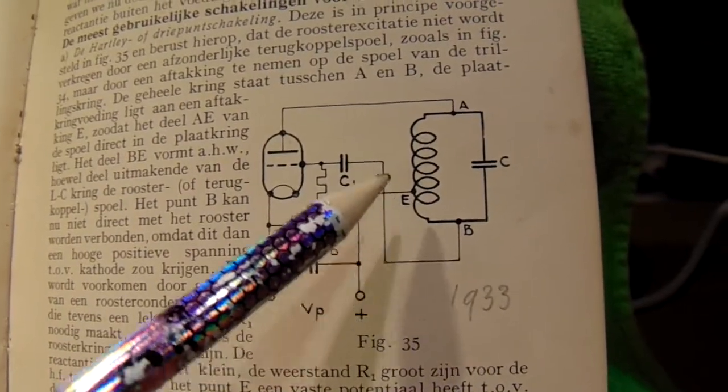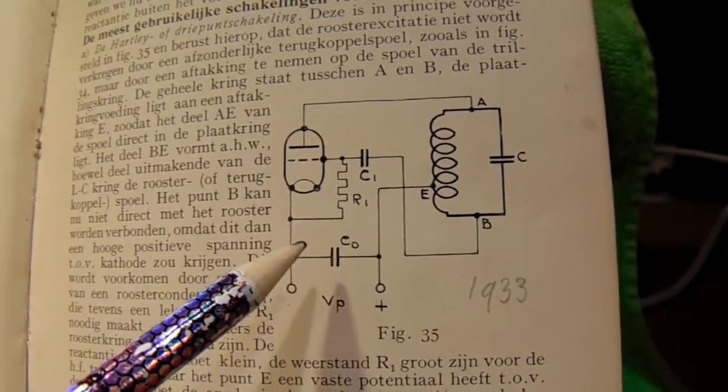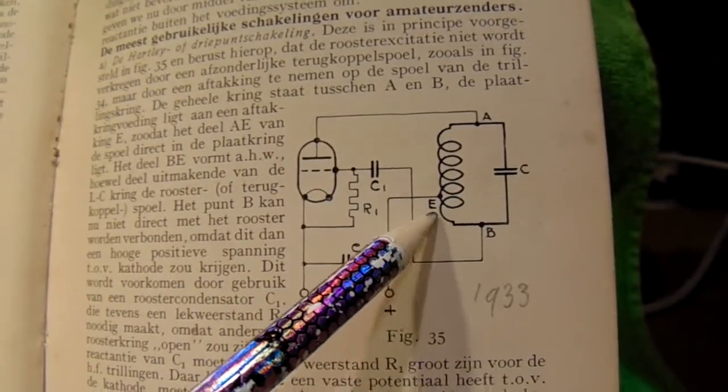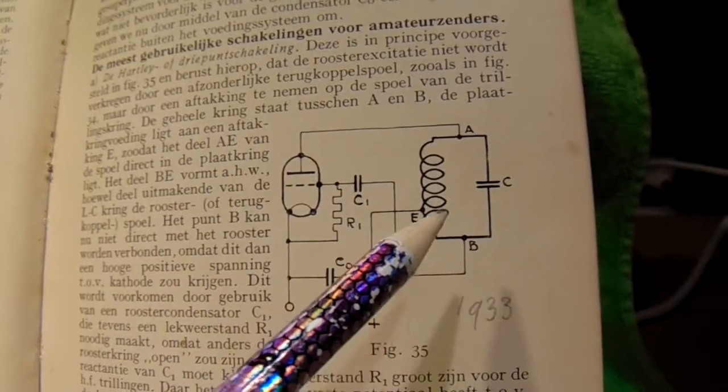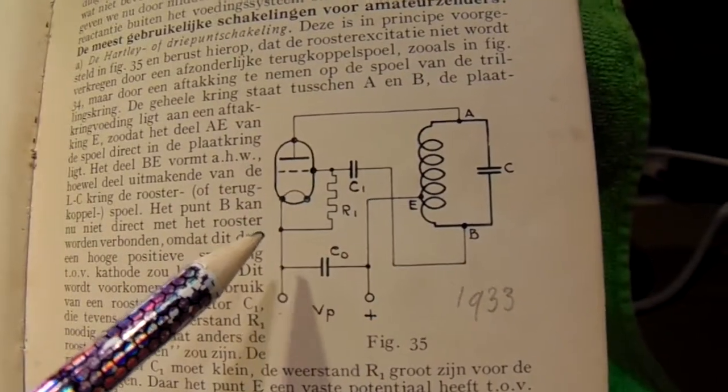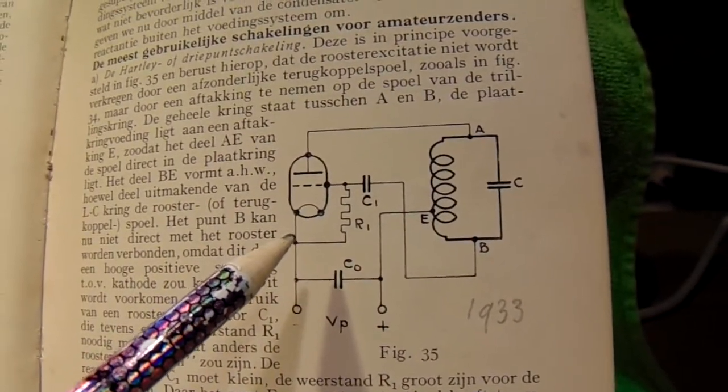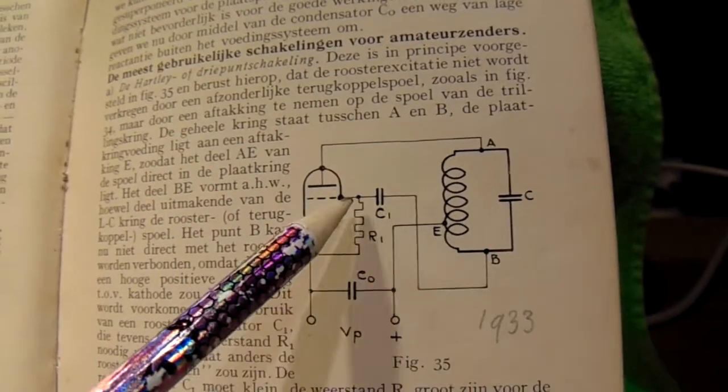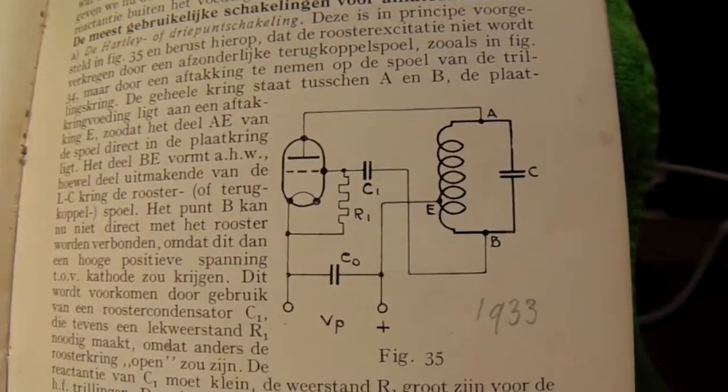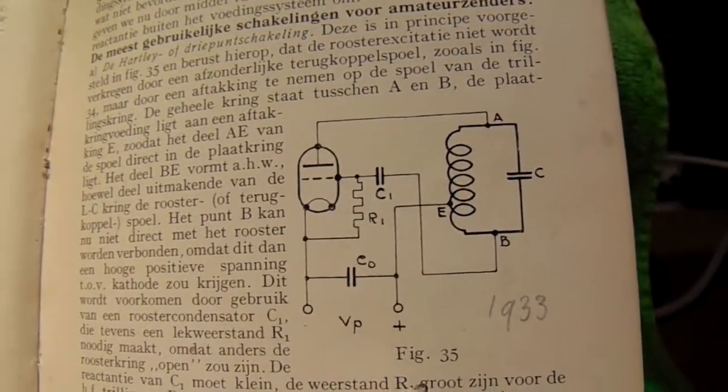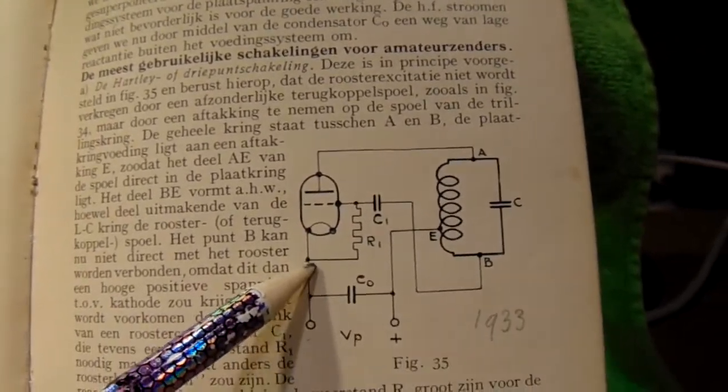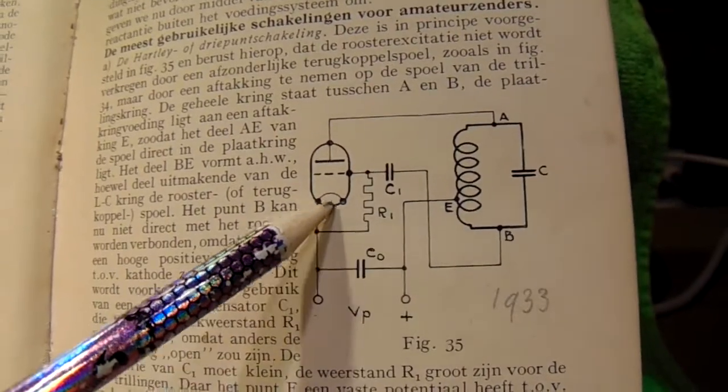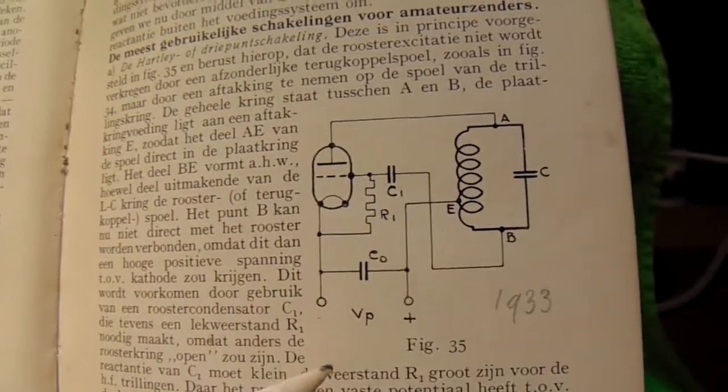This has also a transistorized version. And there we have the same issue. Part of the coil is tapped and sent back to the grid. And there is a video on YouTube where I have mimicked this oscillator and made it into a transistor oscillator. The whole principle stays the same.